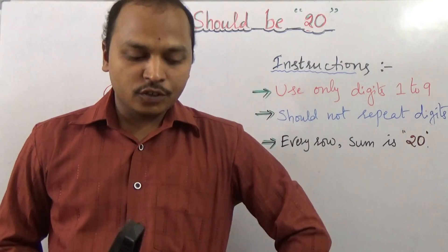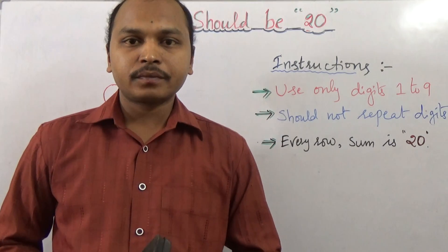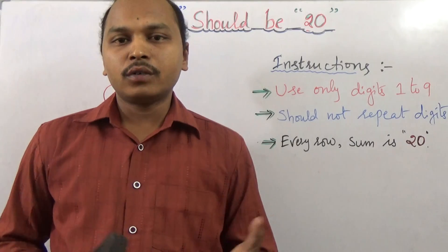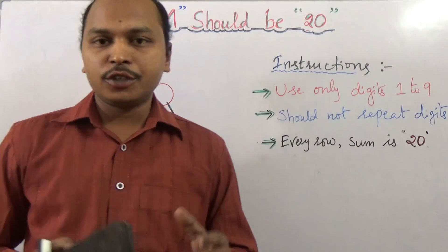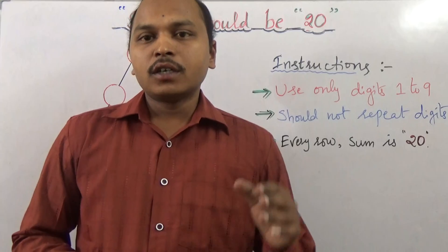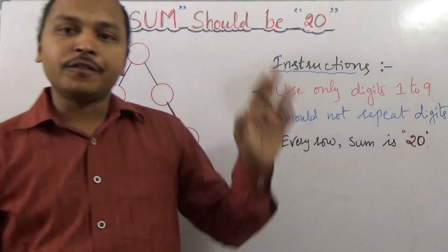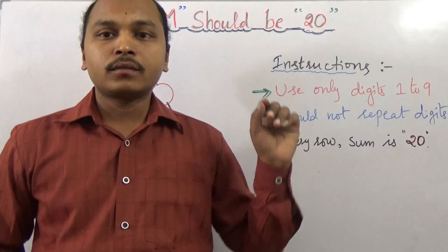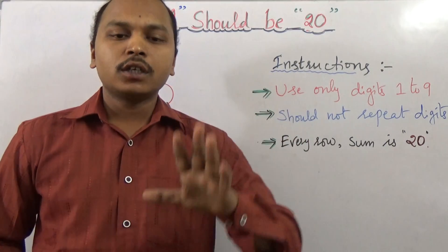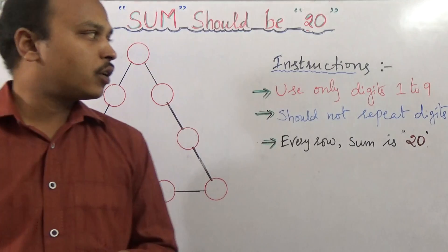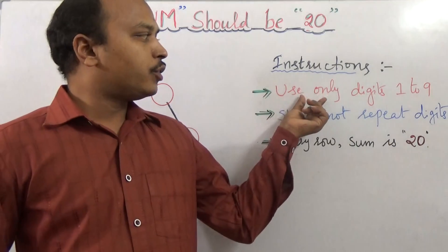Hi friends, I'll ask you one simple math puzzle now to improve reasoning and logical skills. We need to solve some puzzles, right? Now the question of the puzzle is: the sum should be 20. The total sum should be 20. I'll give you some simple instructions. You can see we need to use the digits only 1 to 9.